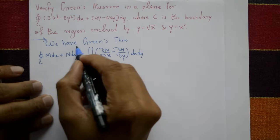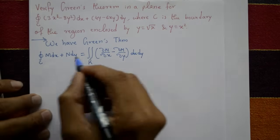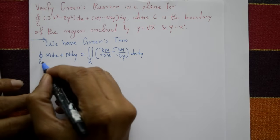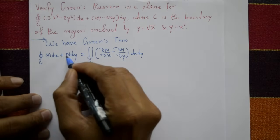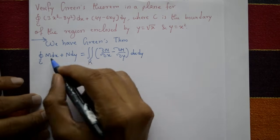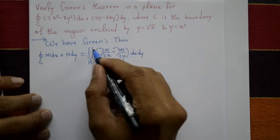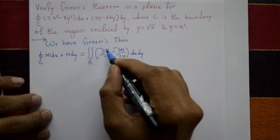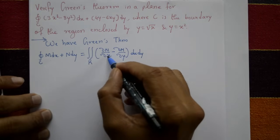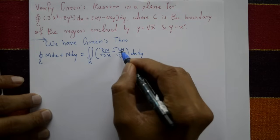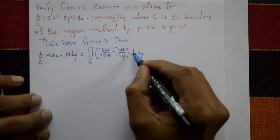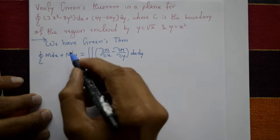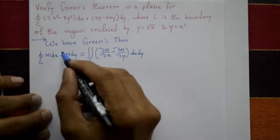Green's theorem states: the closed curve integral of M dx + N dy (left-hand side) equals the double integral over region R of (∂N/∂x − ∂M/∂y) dx dy (right-hand side). We need to prove that left-hand side equals right-hand side.